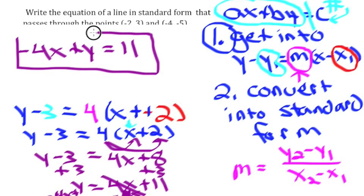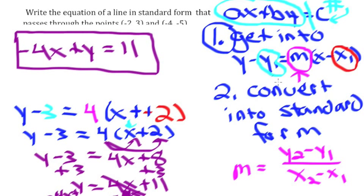And there you go — our final answer is negative 4x plus y equals 11. You've written the equation of a line passing through two points in standard form, by first getting it into point-slope form, finding the slope using the slope formula, substituting in y1 and x1, and then converting to standard form by moving the letters and numbers around.